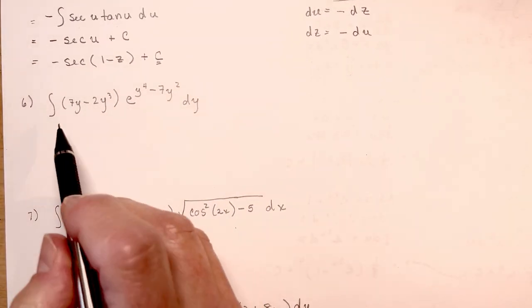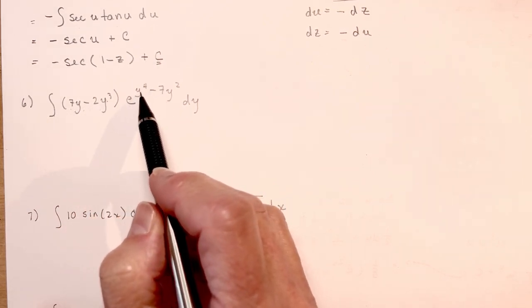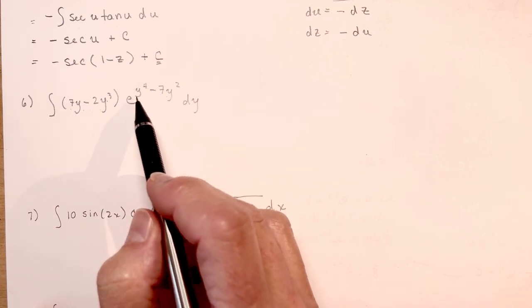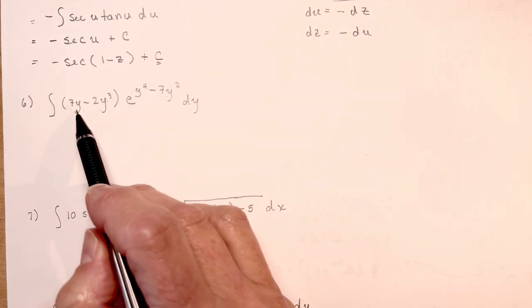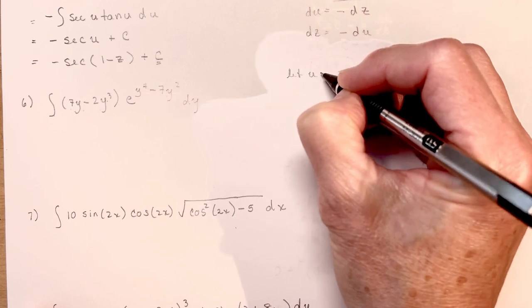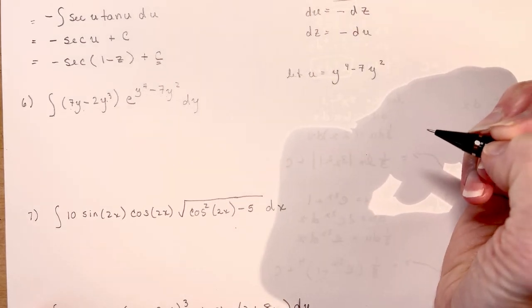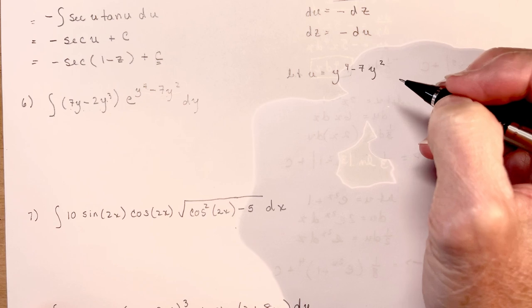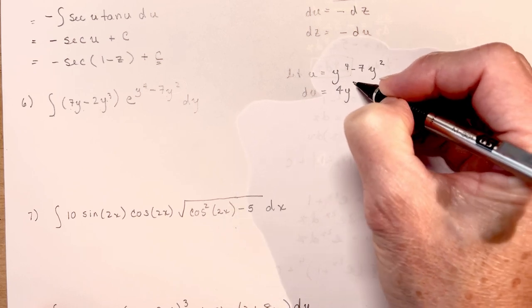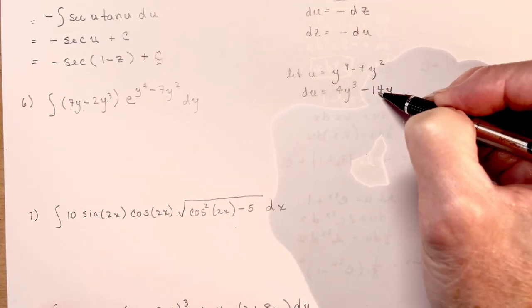Three more. What is the integral of 7y minus 2y cubed times e to the power of y to the fourth minus 7y squared? If you look at this exponent, you can see that if you took the derivative you'd get something pretty similar to the coefficient out front. So let u be equal to y to the fourth minus 7y squared. Taking the derivative: du equals 4y cubed minus 14y dy.